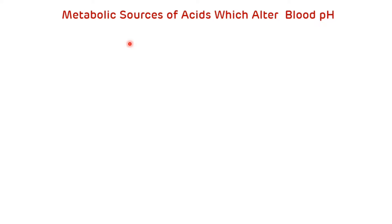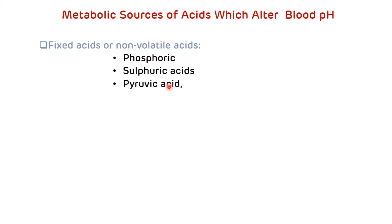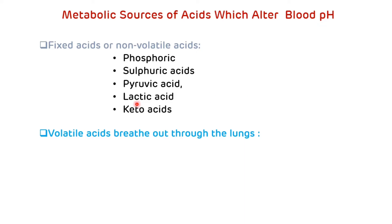Metabolic sources of acid which can alter blood pH include fixed or non-volatile acids such as phosphoric acid and sulfuric acid, produced from the metabolism of proteins and lipoproteins, as well as pyruvic acid, lactic acid, and keto acids — examples of organic acids. The one example of a volatile acid that can be breathed out through the lungs is carbonic acid.